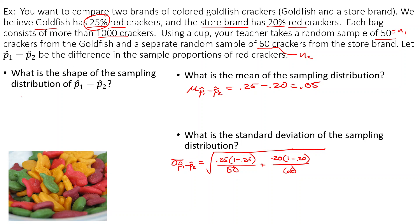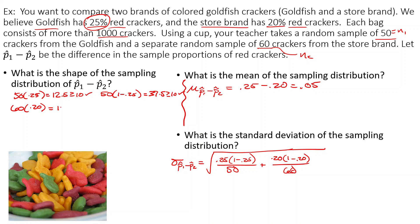For the shape, we have to do some work. N1 times P1: 50 times 0.25 equals 12.5, which is greater than or equal to 10 — checks out. 50 times (1 minus 0.25) equals 37.5, also greater than or equal to 10 — checks out. For the store brand: 60 times 0.20 equals 12, greater than or equal to 10 — checks out. And 60 times 0.80 equals 48, also greater than or equal to 10. So we do have an approximately normal sampling distribution.